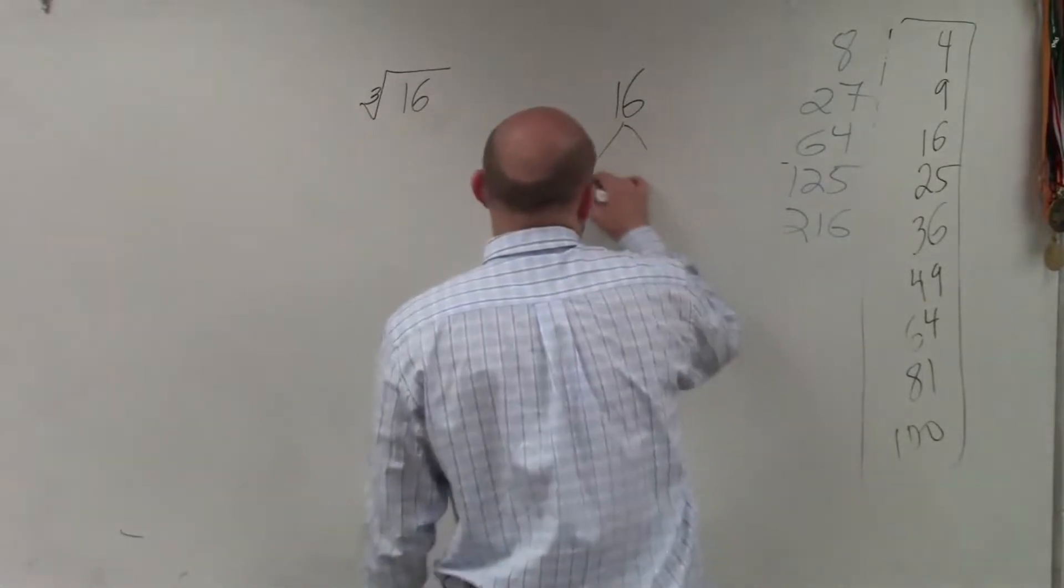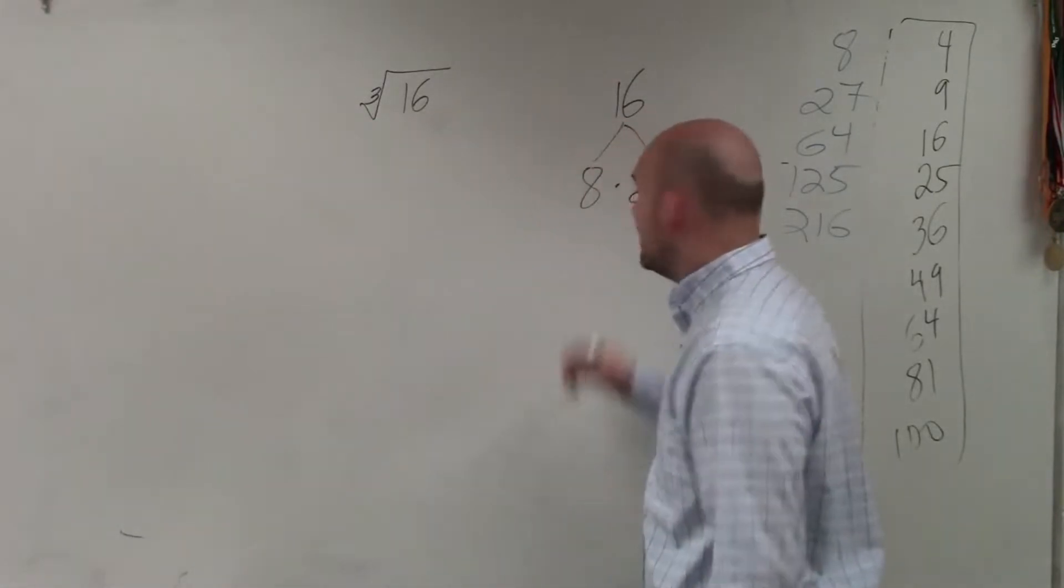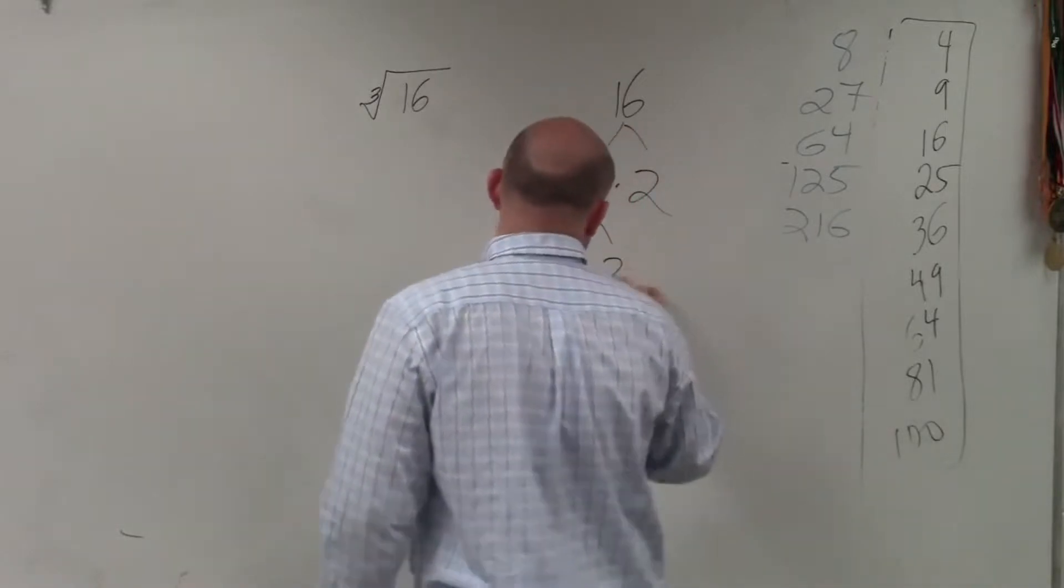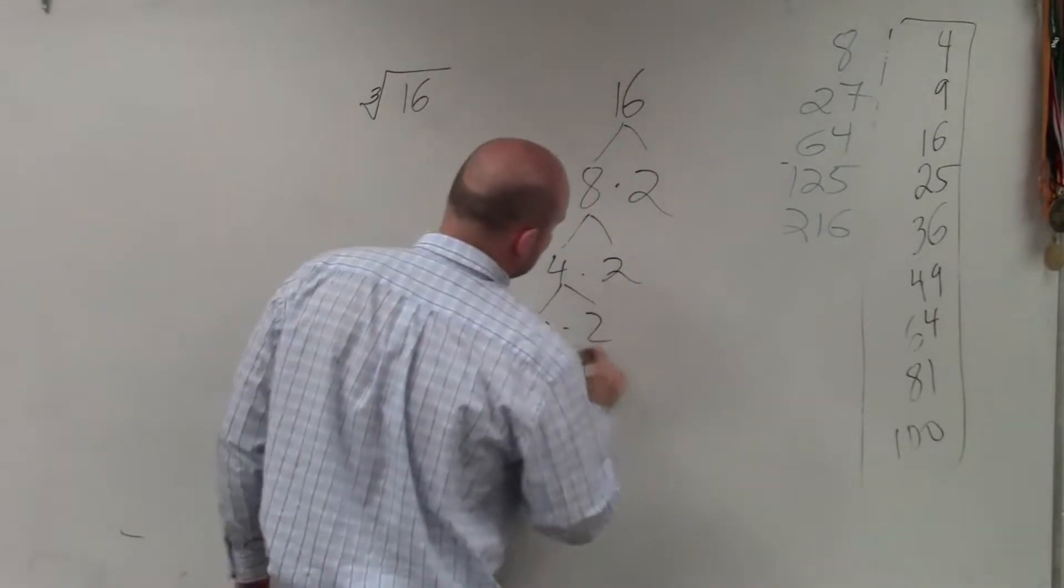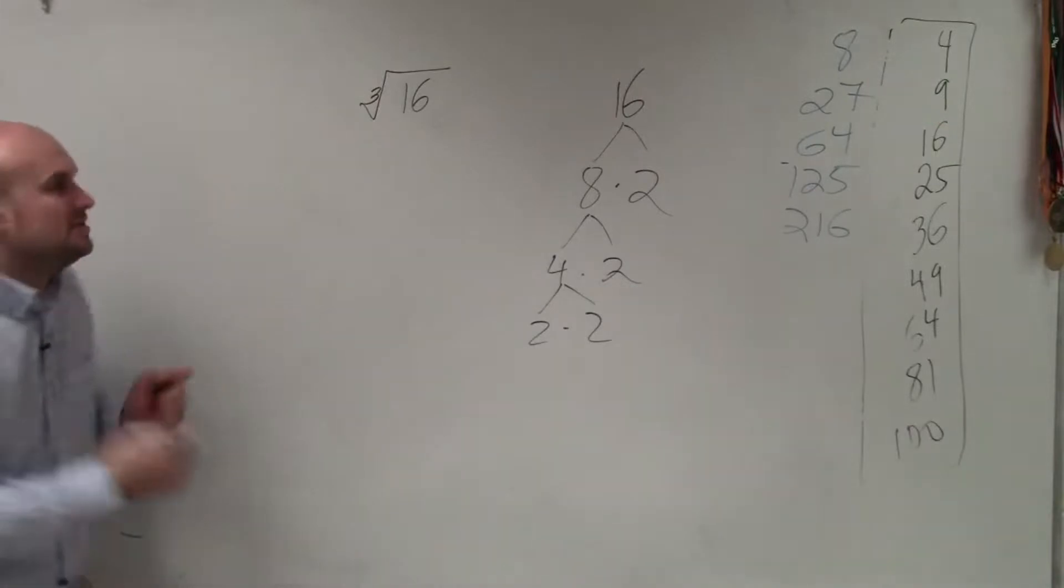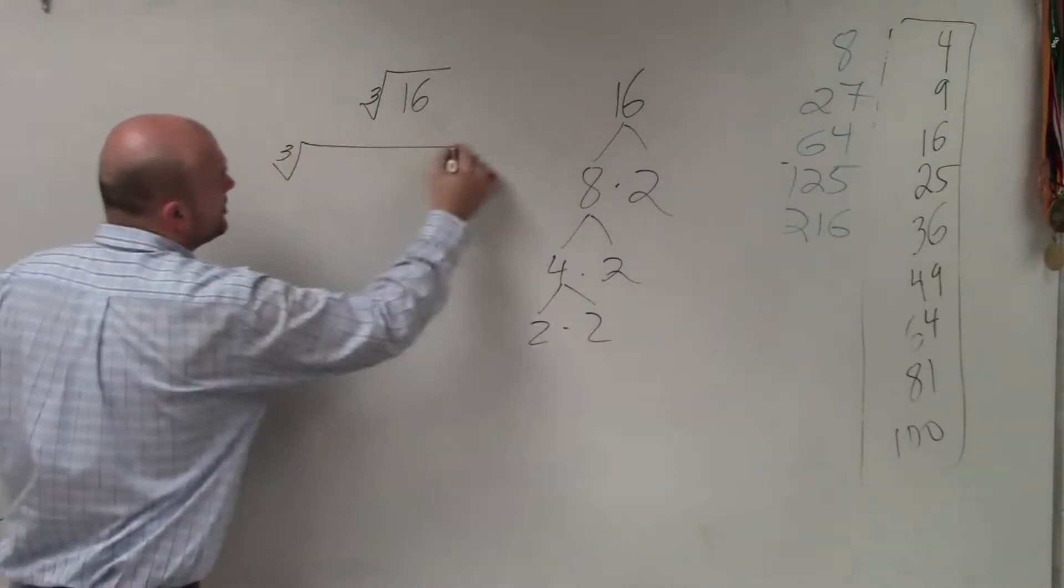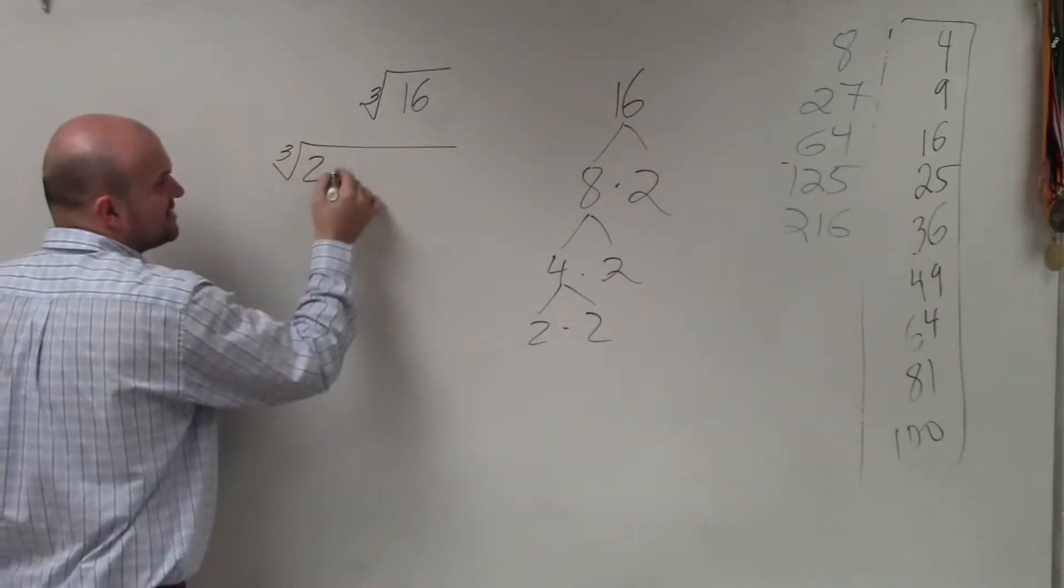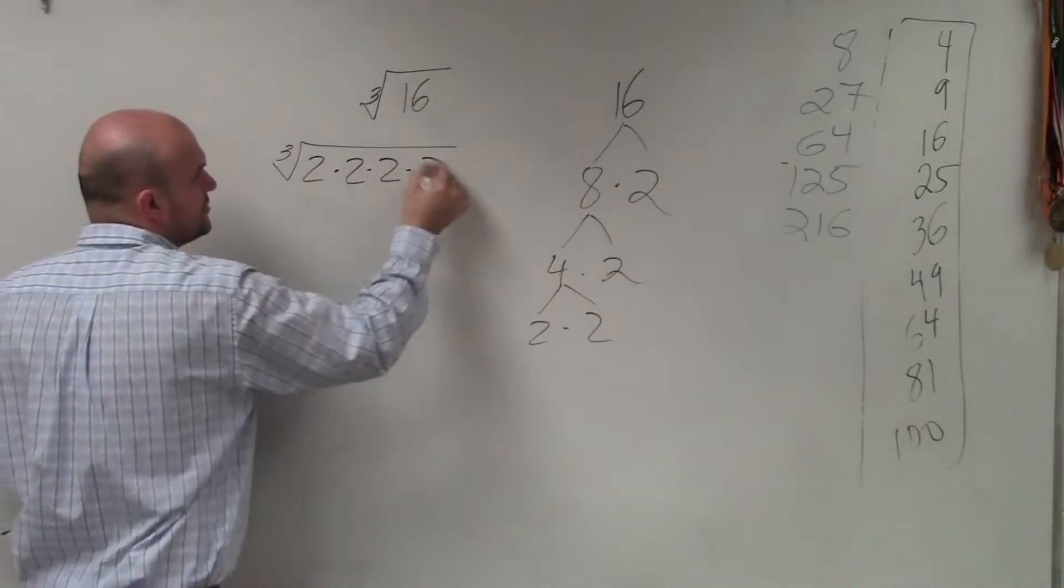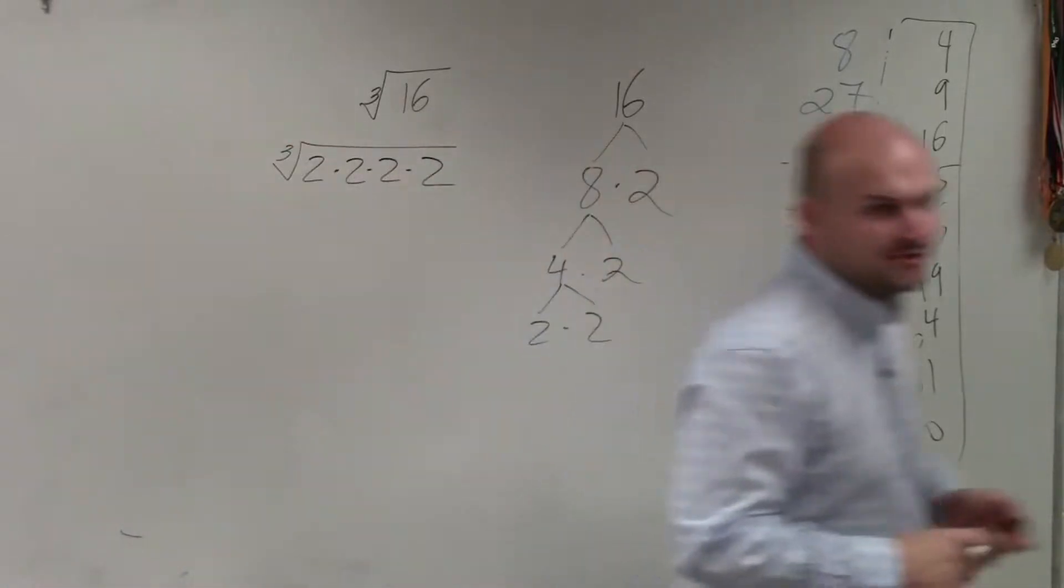So I break this down into 8 times 2. I break that down into 4 times 2, and that broken down into 2 times 2. So what I want you guys to understand is that the cube root of 16 is the same thing as 2 times 2 times 2 times 2. Do you guys agree with me? Yeah.